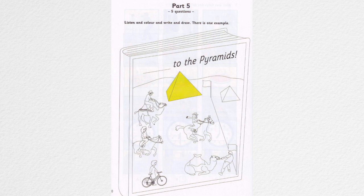5. Last, I want you to find the woman who's riding a horse. I can see her. She's wearing a long dress. That's right. Can you see her scarf? Yes. Well, colour it blue. Great. She's winning the race, I think.